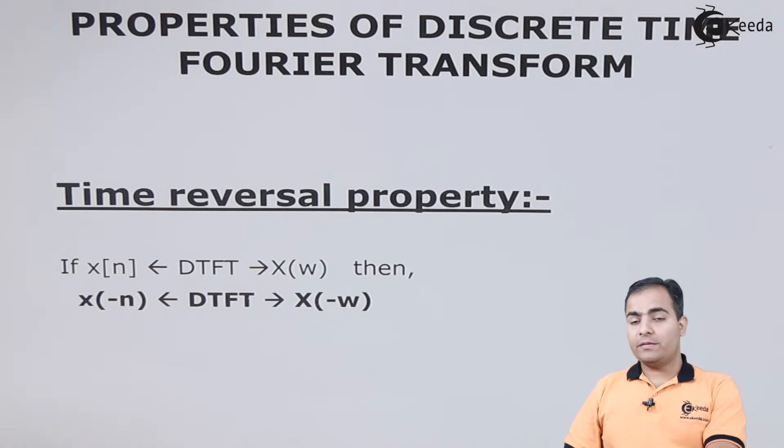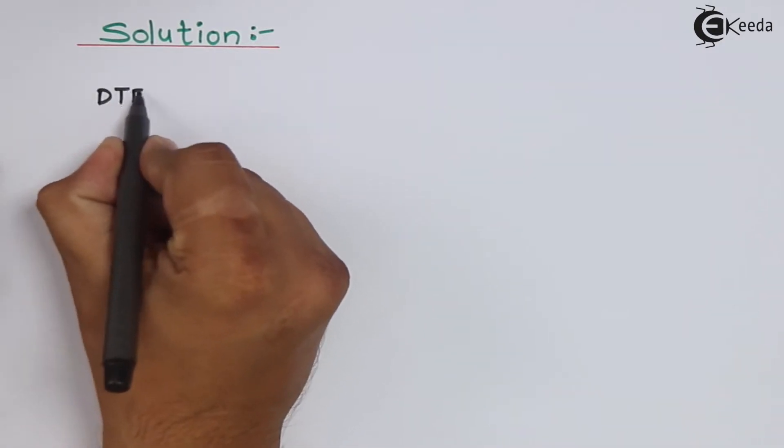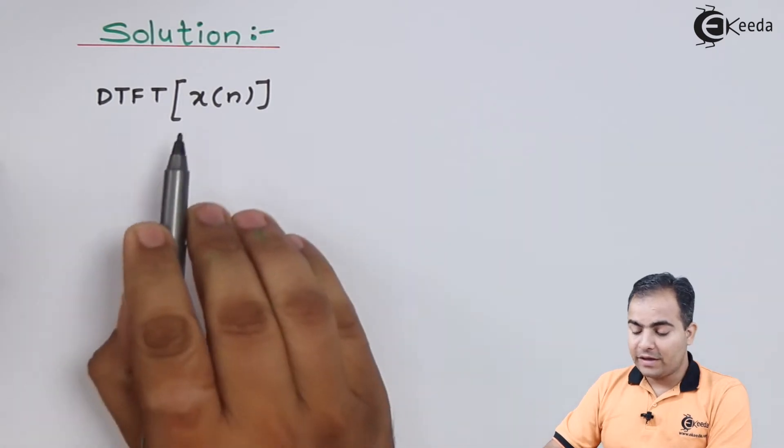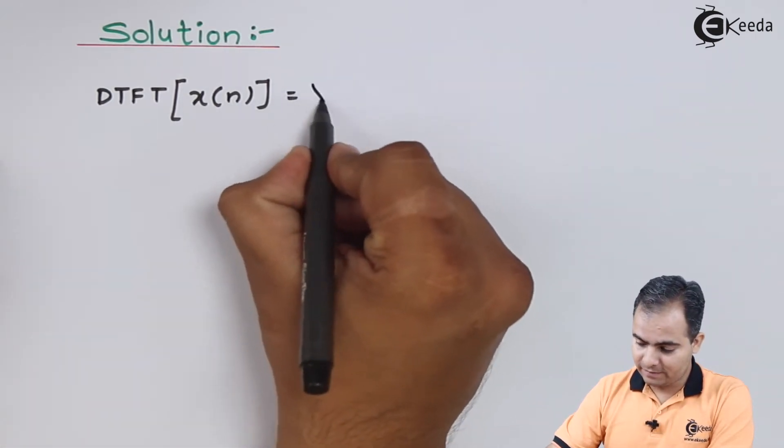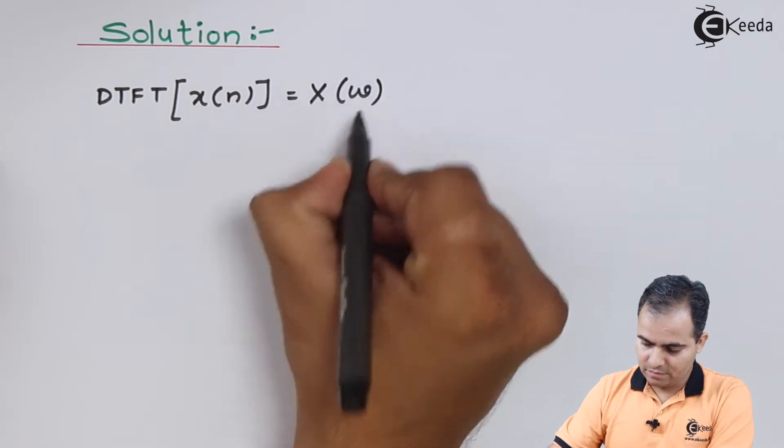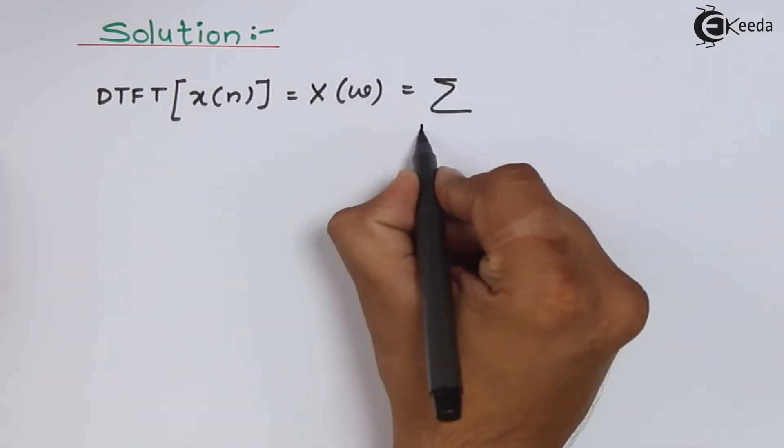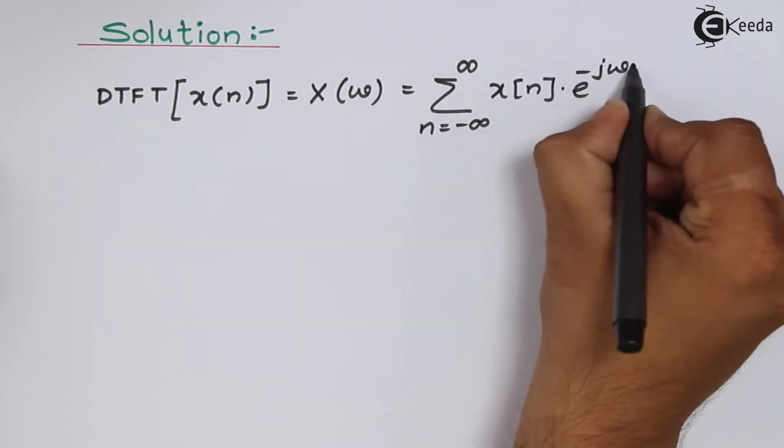So let's see what will be the solution. We will use the definition of DTFT. The DTFT of any discrete sequence x of n is represented by X of omega, and the definition is: X of omega equals the summation from n equals minus infinity to infinity of x[n] times e to the power minus j omega n.